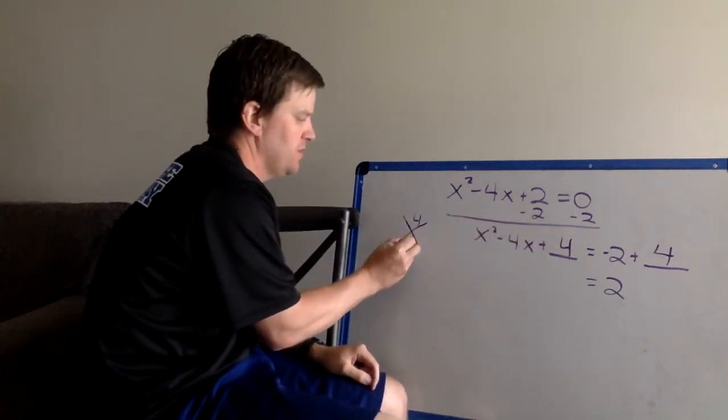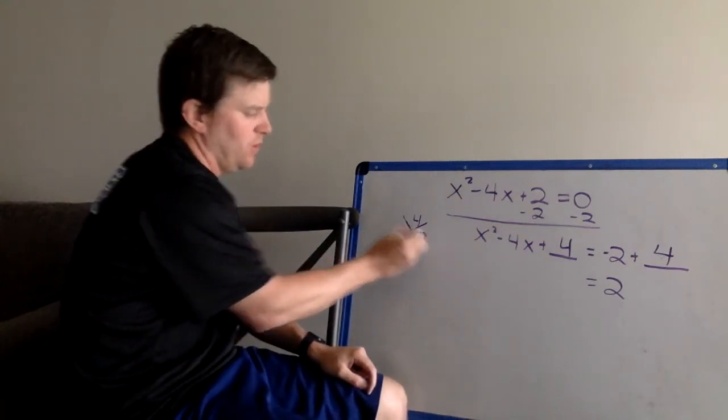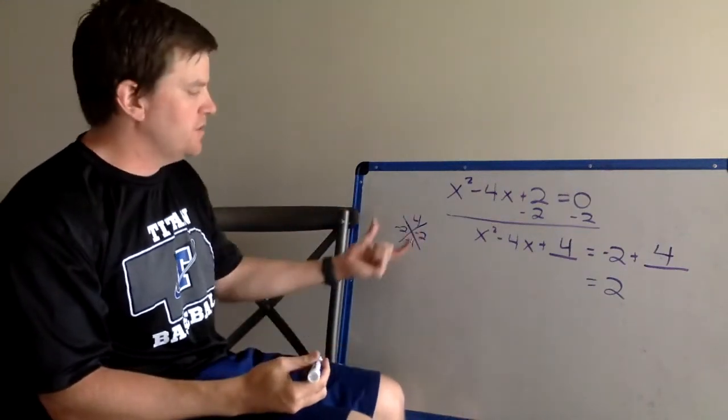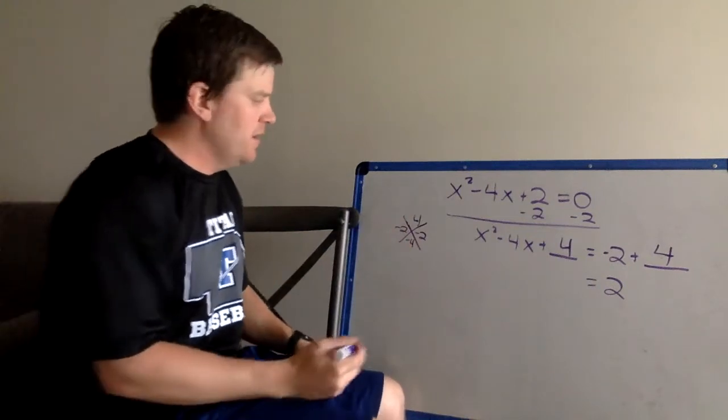Negative 4 on the bottom. So we know 2 and 2 works, but it's got to get to a negative 4. So we know those 2's have to be negative. Right? Because negative 2 times negative 2 equals positive when we're multiplying, equals negative when we're adding.